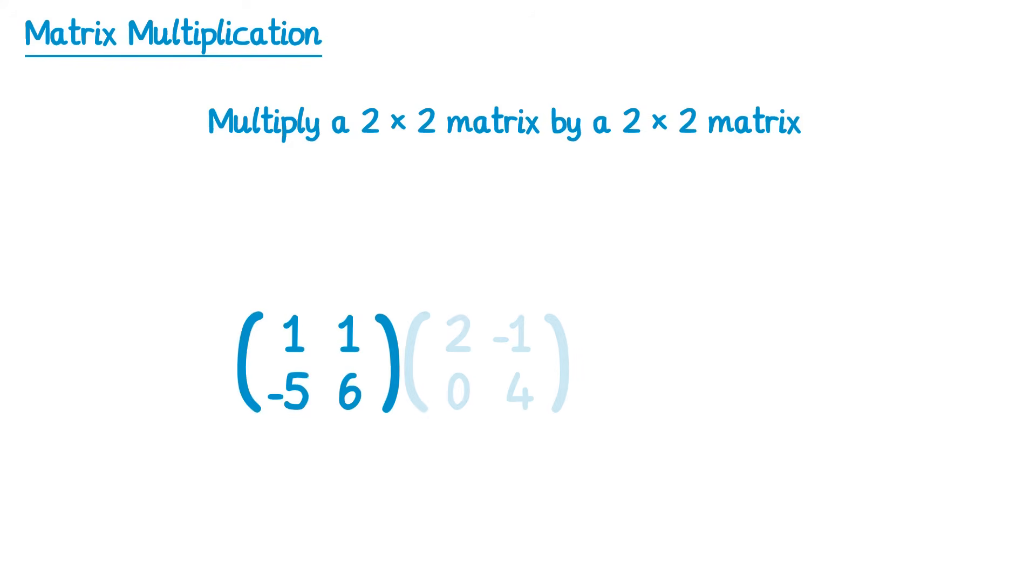Now you also need to be able to multiply a 2 by 2 matrix by another 2 by 2 matrix, and this is where things can get more complicated still. So let's take two 2 by 2 matrices like this, and the resulting matrix will also be a 2 by 2 matrix. So we start with the first matrix, and select the first row, and the second matrix we select the first column. And we'll do just as we did before, so we'll do 1 times 2, which is 2, and then we'll add to that 1 times 0, which is of course 0, and 2 add 0 makes 2.